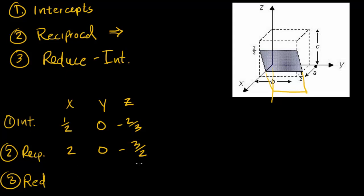We need to get rid of this three halves, or negative three halves. So we'll multiply through by two, and we'll get four, zero. Multiplying this by two, we'll get negative three.